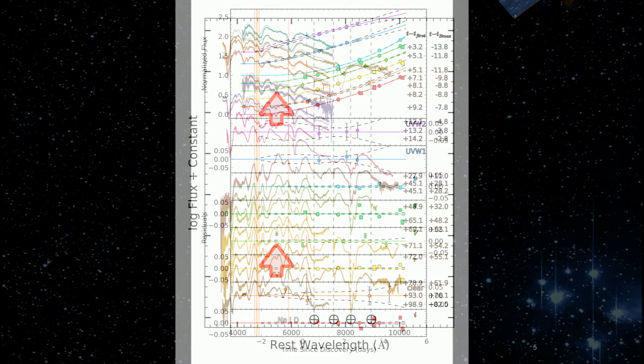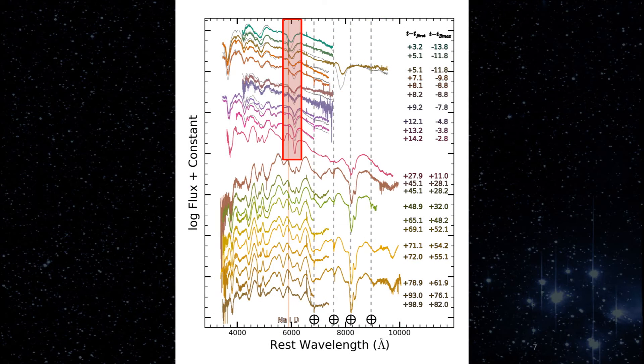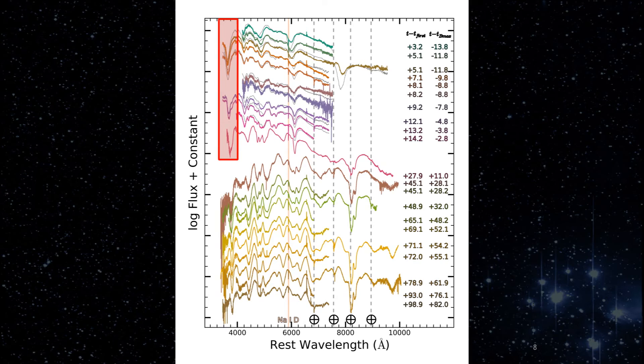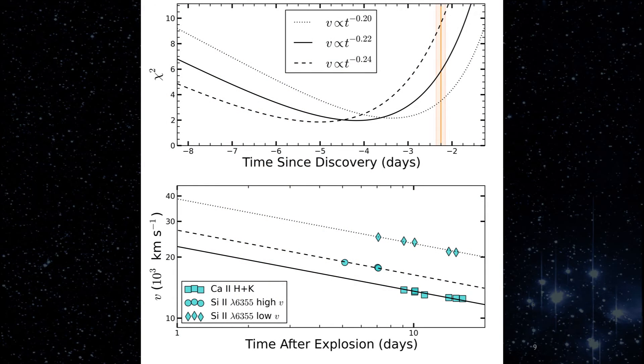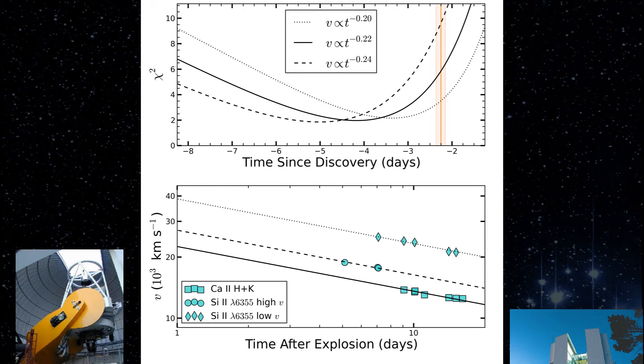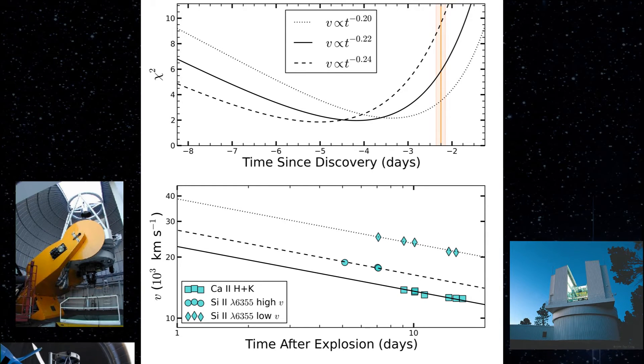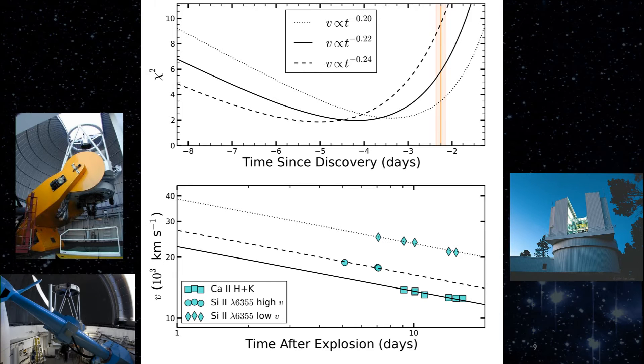Second, we used the expansion velocities of the early-time silicon and calcium absorption features present in our spectra to fit for the explosion time assuming the power-law relationship presented in Piro and Nakar 2014. These observations were acquired with the MDM 2.4 meter, the Apache Point Observatory 3.5 meter, and the Fred Lawrence Whipple Observatory 1.5 meter.